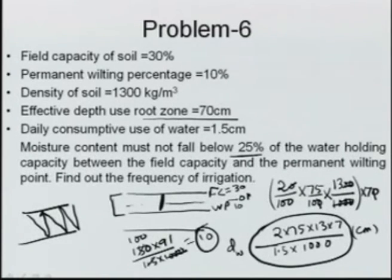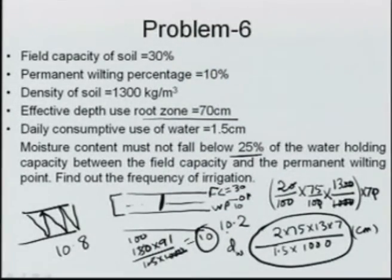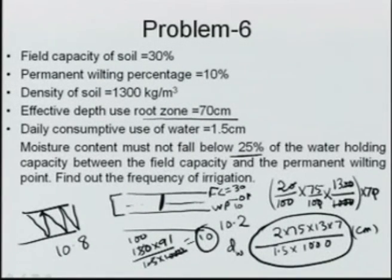An important precaution: if your answer is 10.8, do not round up to 11 — to be safe, take the nearest whole integer smaller than the computed value, i.e., 10 days. Similarly, 10.2 also becomes 10 days. Always use the smaller integer for the irrigation frequency to avoid under-irrigating.